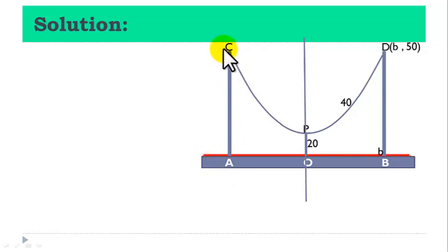Clearly, by symmetry, the length of an arc CP is equal to PD. That is, 80 meters is divided into two equal parts, so that the length of an arc PD is equal to 40 meters.